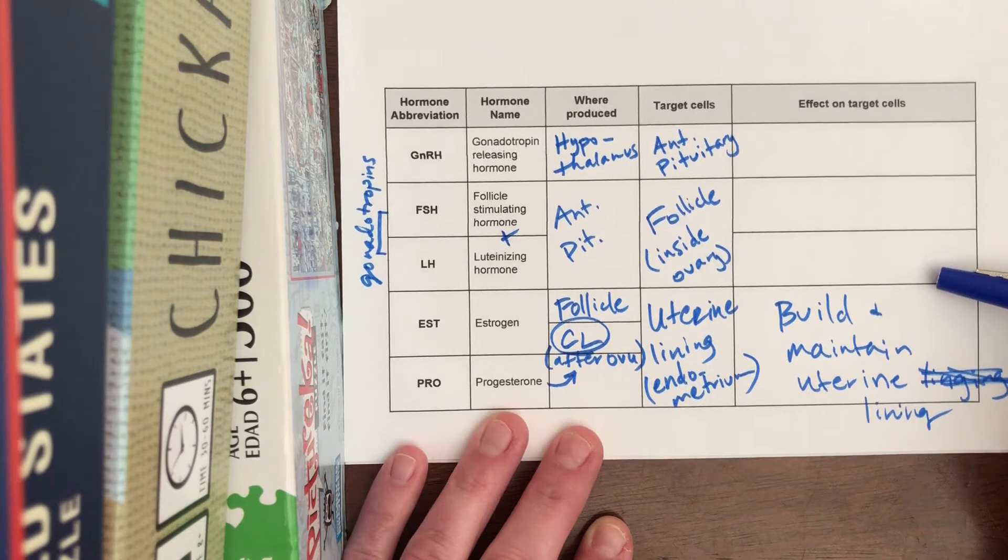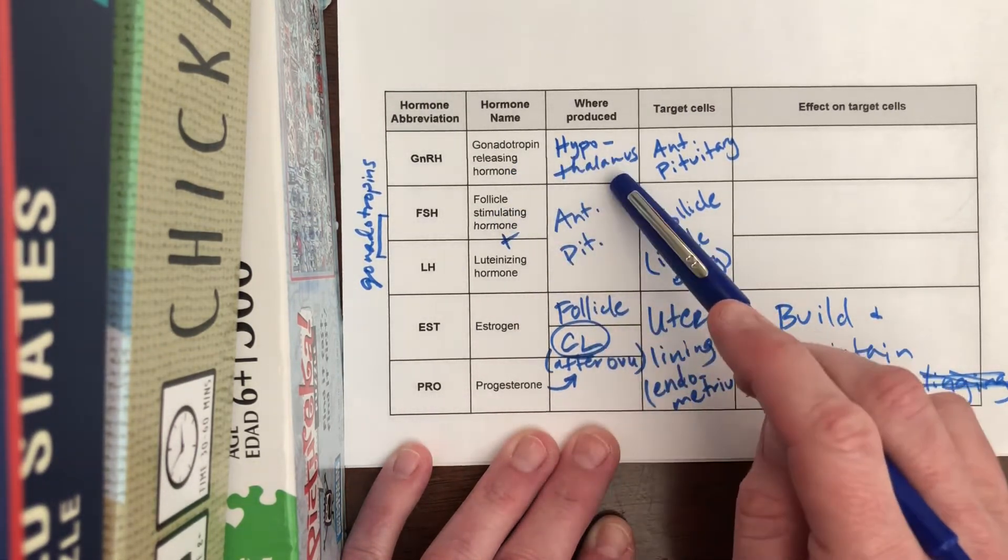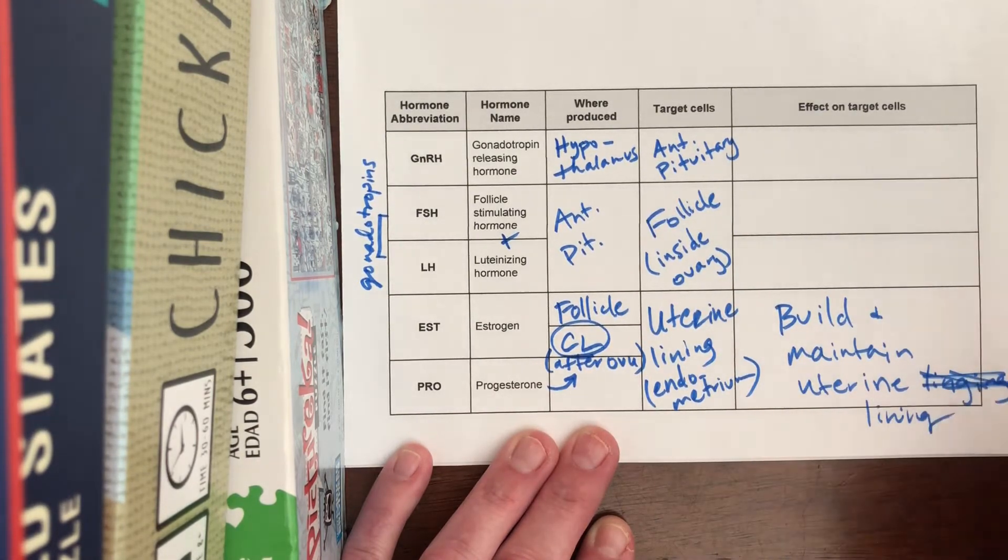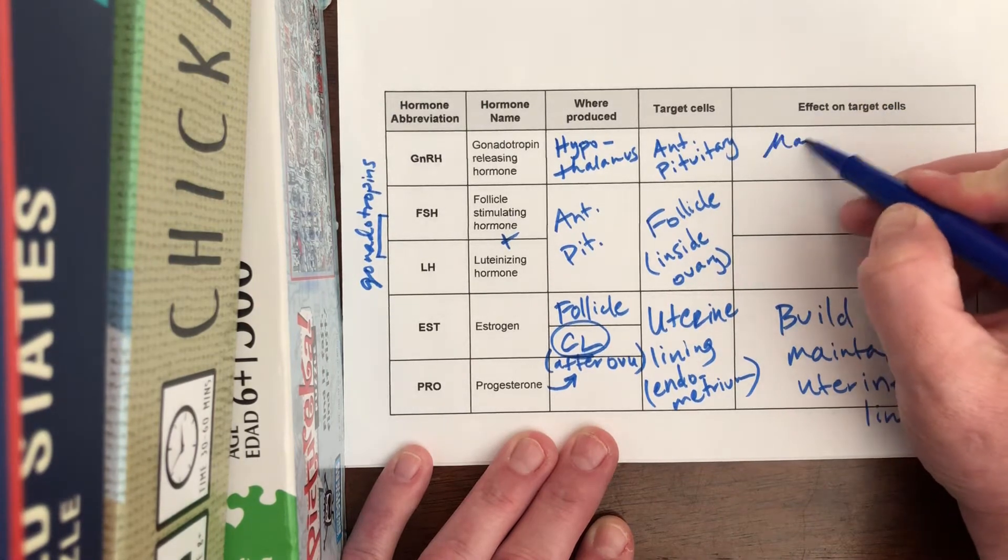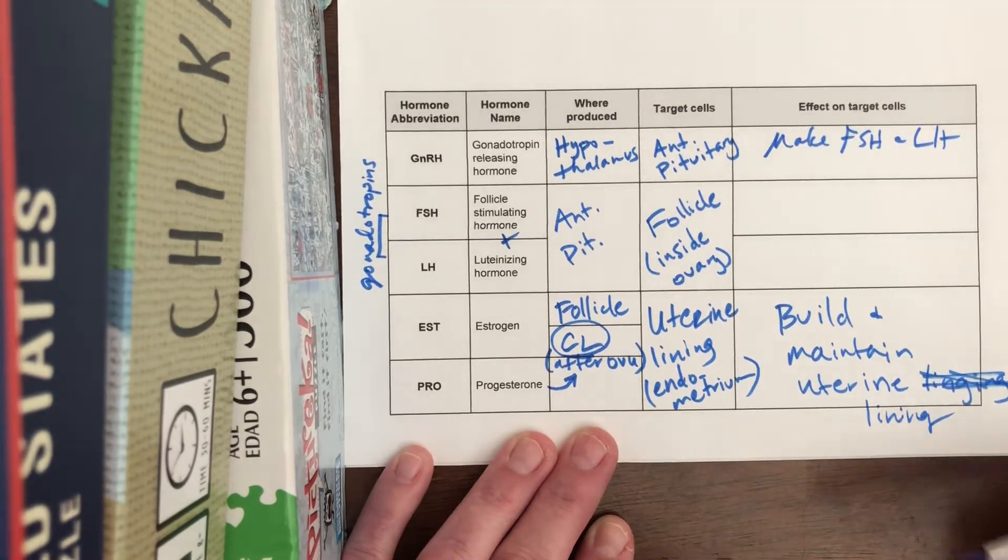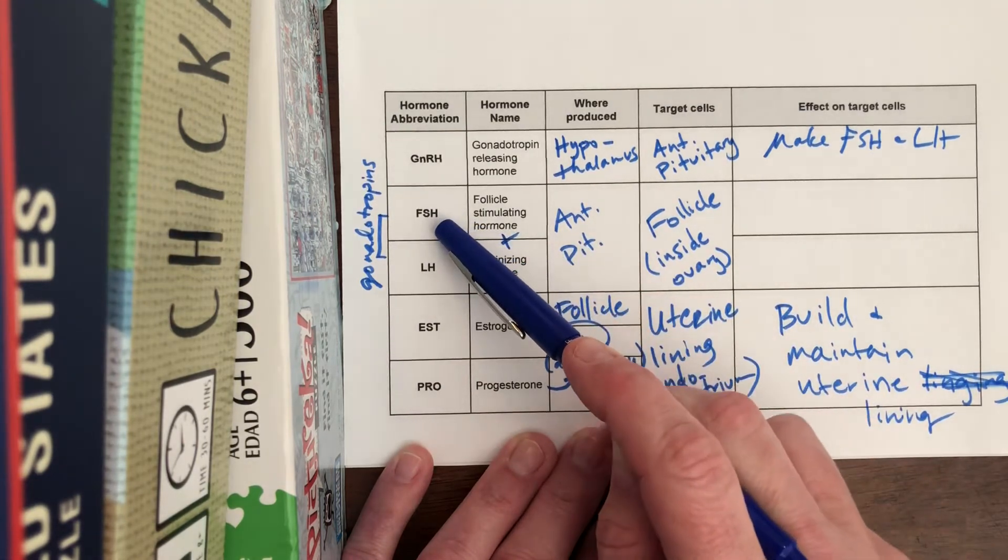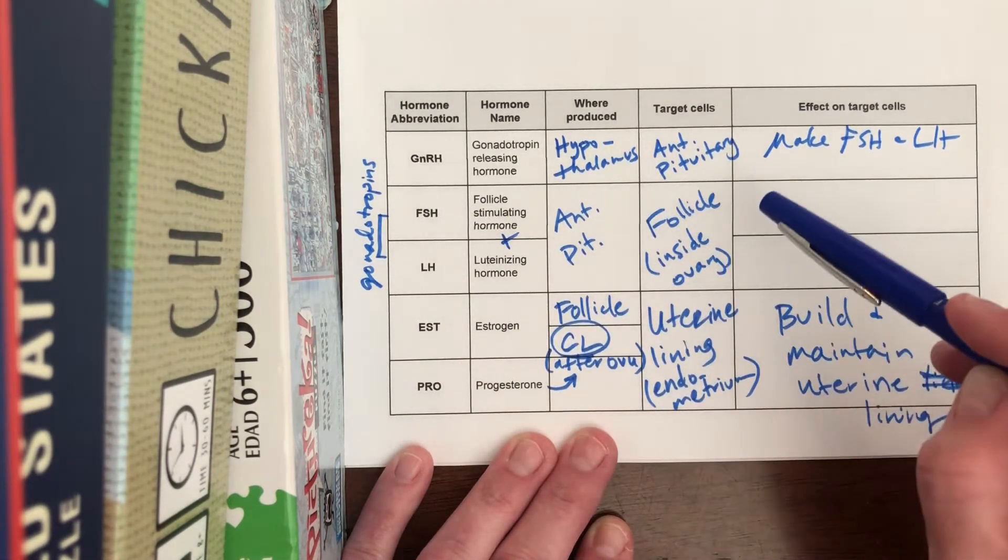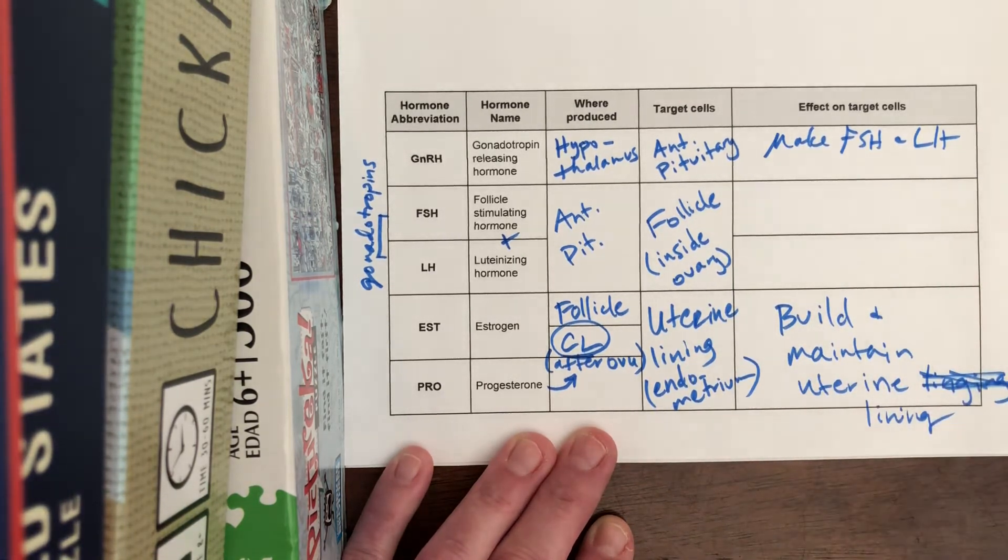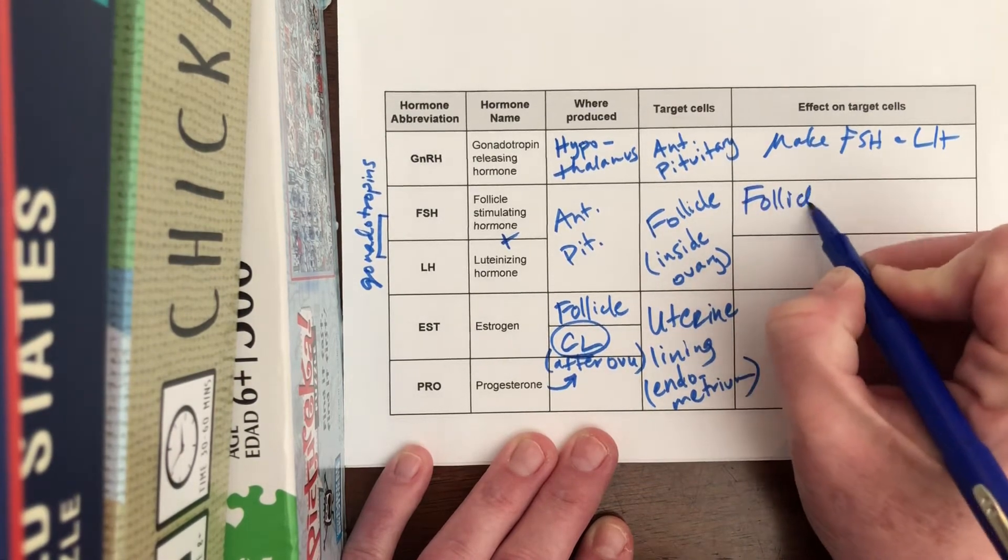You notice I didn't fill in these other columns, but I think they're obvious, right? So if gonadotropin releasing hormone is produced in the hypothalamus, targets the anterior pituitary, what's it gonna do? Tell them to make FSH and LH. And then if follicle stimulating hormone from the anterior pituitary acts on the follicles, what's it gonna do? Stimulate the follicle to mature - follicle maturation.